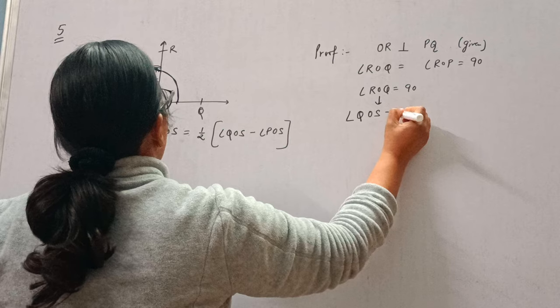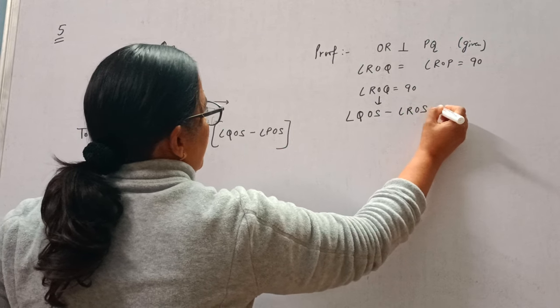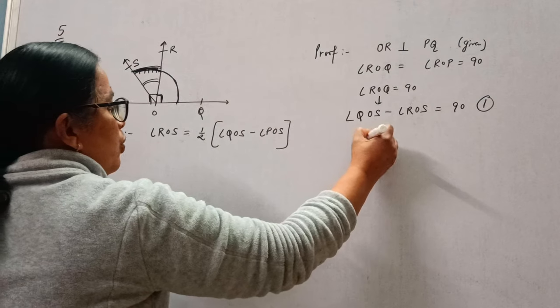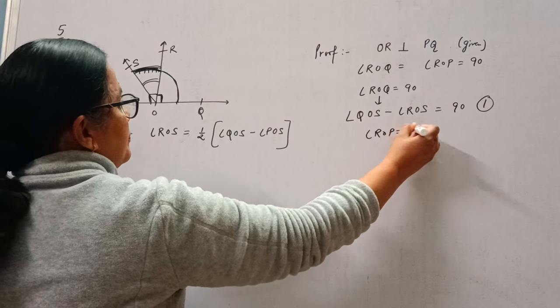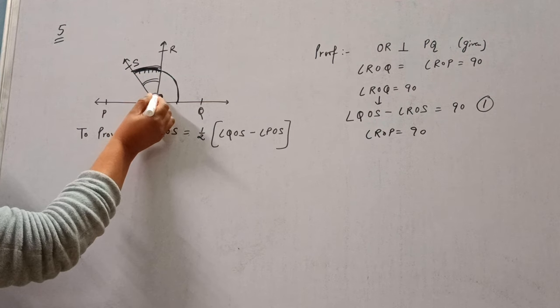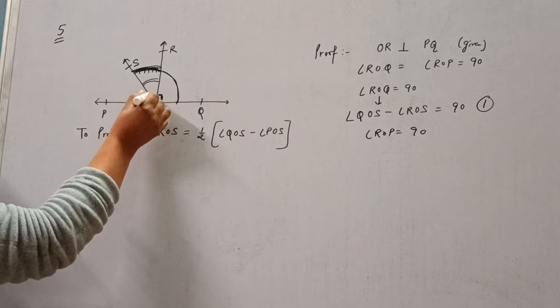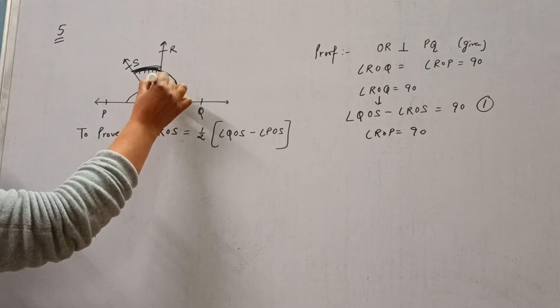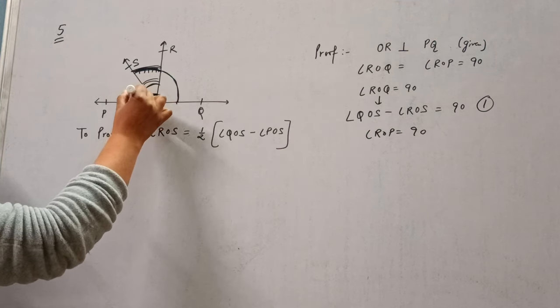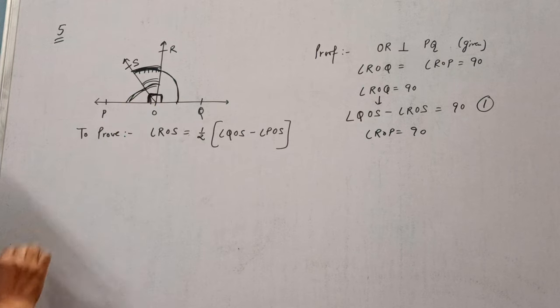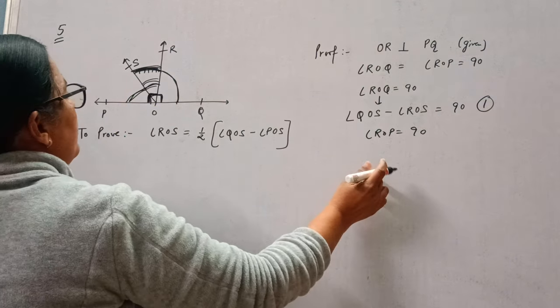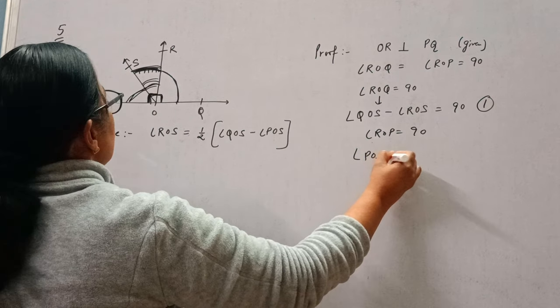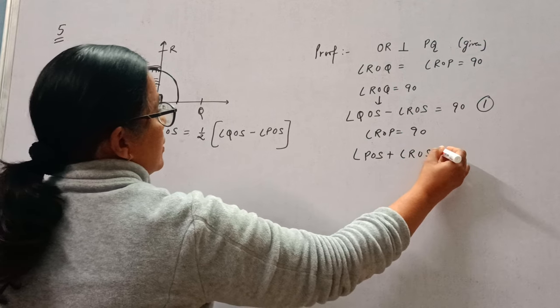Angle QOS. So I will change this angle ROQ as angle QOS minus angle ROS. This will become 90 degrees, equation 1. Now see, angle ROP is also 90 degrees. This ROP, so how can we write this angle ROP? Angle POS plus angle ROS. If we join these two angles, ROS plus POS, then it will become ROP. So I am writing it as angle POS plus angle ROS equals 90 degrees.